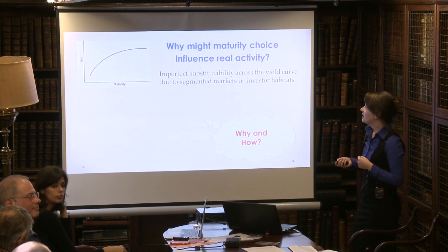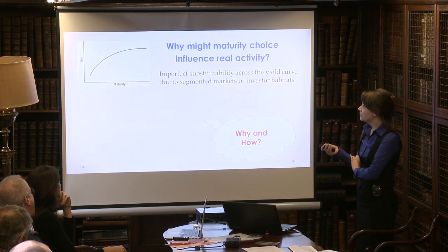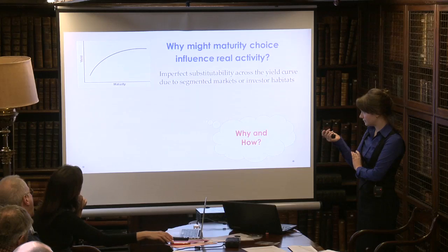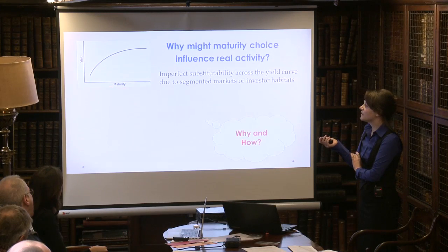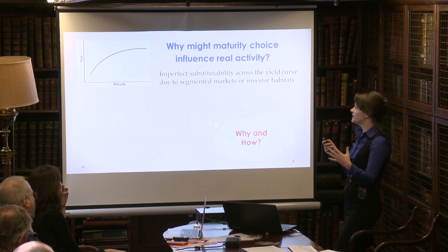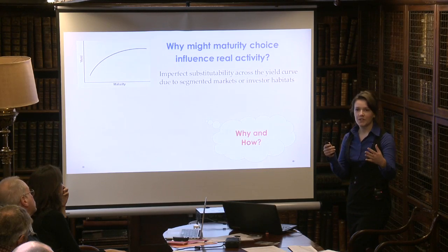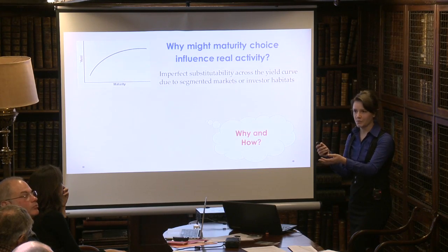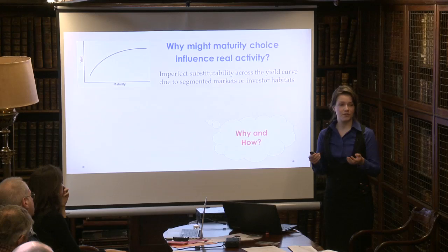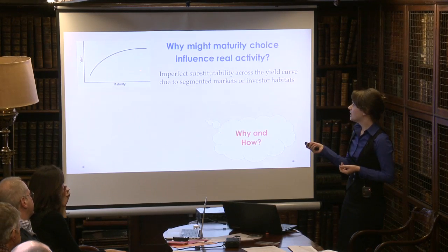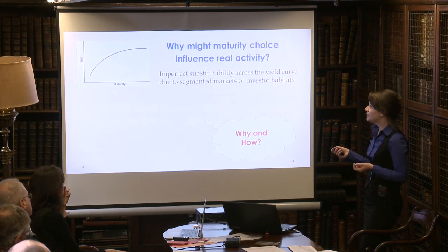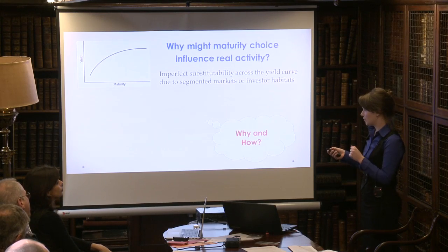This is where we can look at the yield curve, where on the vertical axis you have the yield or the cost of borrowing — the interest rate — and on the horizontal axis you have the maturity, going from three months to maybe thirty years. In this world you have imperfect substitutability across the yield curve, so one long-term instrument is not equal to the sum of future short-term instruments, because maybe you have investor habitats. A pension fund saving up for your retirement might be a lot more interested in long-term maturity and being in that habitat, and not interested in three-month T-bills.